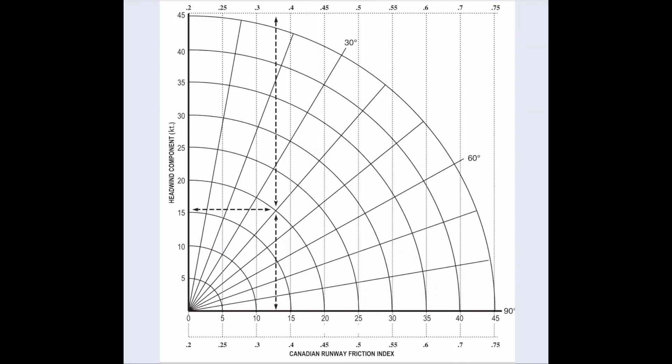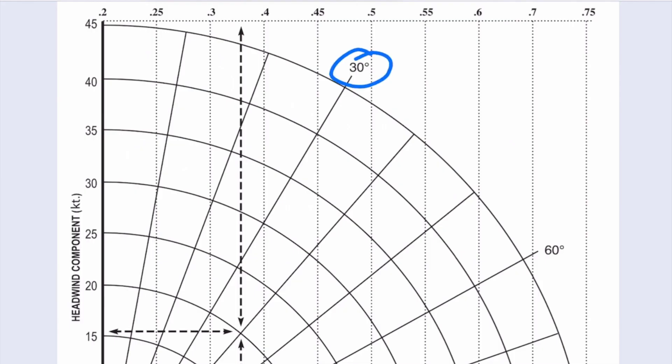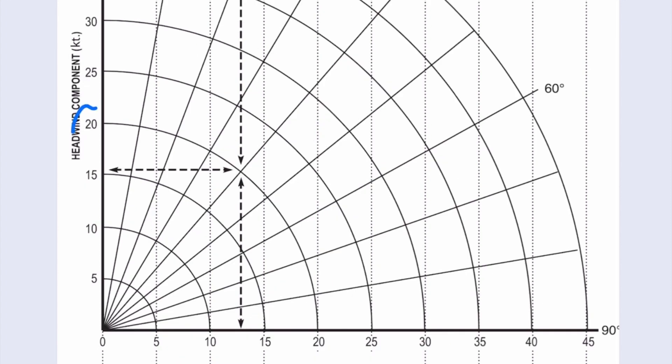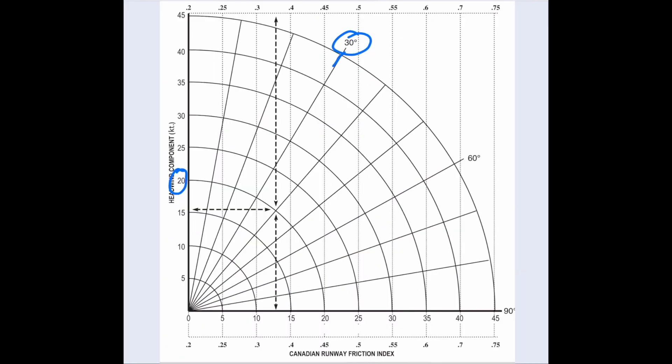The first thing you want to do is to enter the graph from the wind angle, so the wind angle is 30 degrees and the wind speed we have is 20 knots. If we first enter from the wind angle you draw the line out and then you follow the arc for the wind, there's 20 knots.